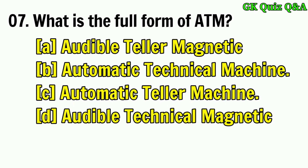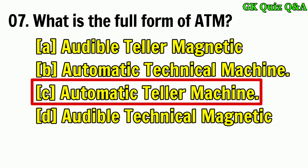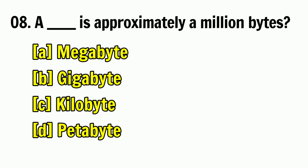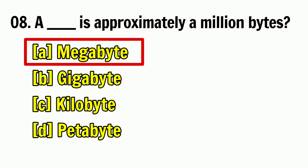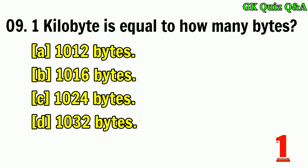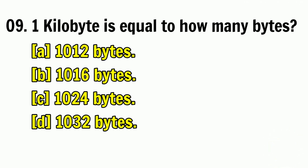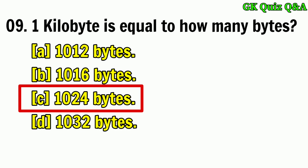What is the full form of ATM? Answer C — automatic teller machine. A dash is approximately a million bytes — answer A — megabyte. One kilobyte is equal to how many bytes? Answer C — 1024 bytes.